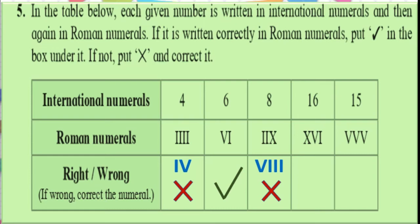What about 16? That is X and 6 — XVI. That is right. And what about 15? The last one shows V, V, V — three times V. That is wrong, because rule 2 says we cannot use V twice or thrice, only one time. So how do we write 15? It is 10 and 5, that is XV.